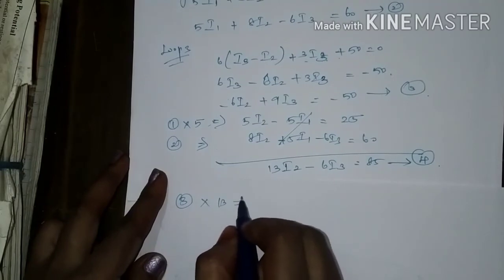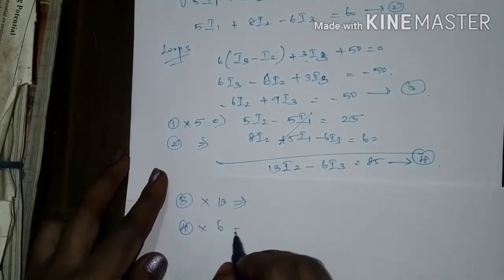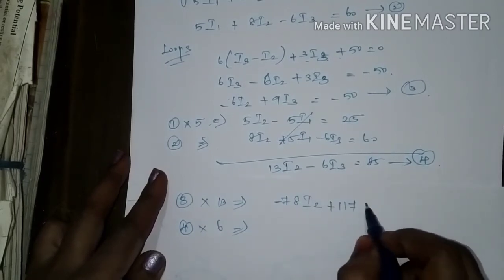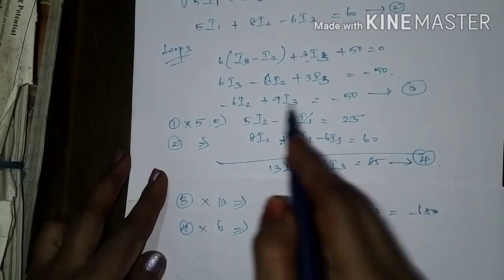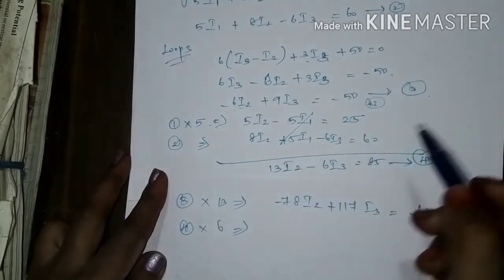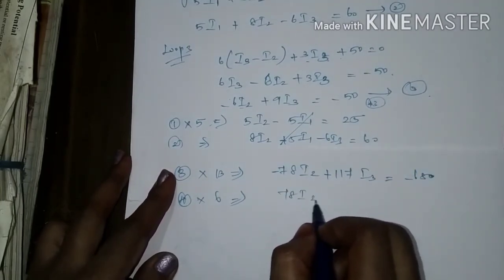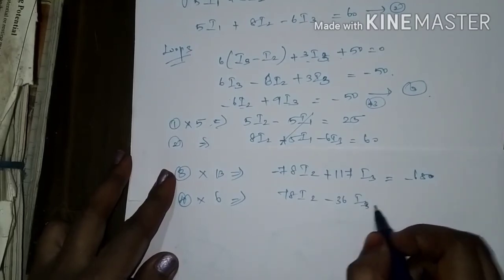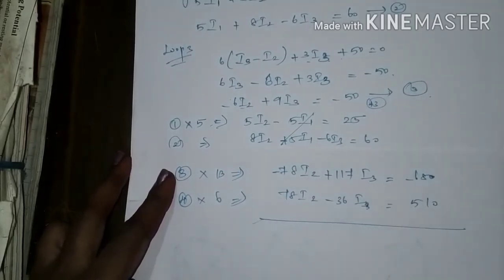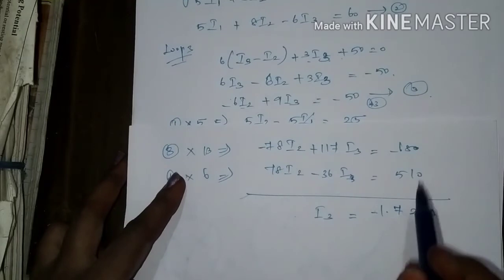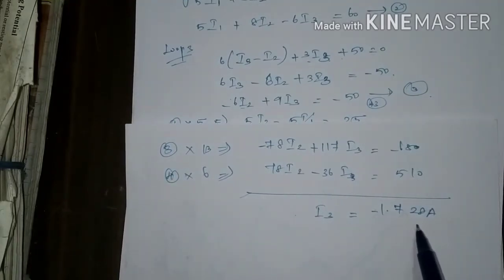Multiply equation 3 by 13 and equation 4 by 6. This gives 78I2 + 117I3 = -650, and 78I2 - 36I3 = 510. Cancelling out I2, you get the value of I3 as minus 1.728 amperes.